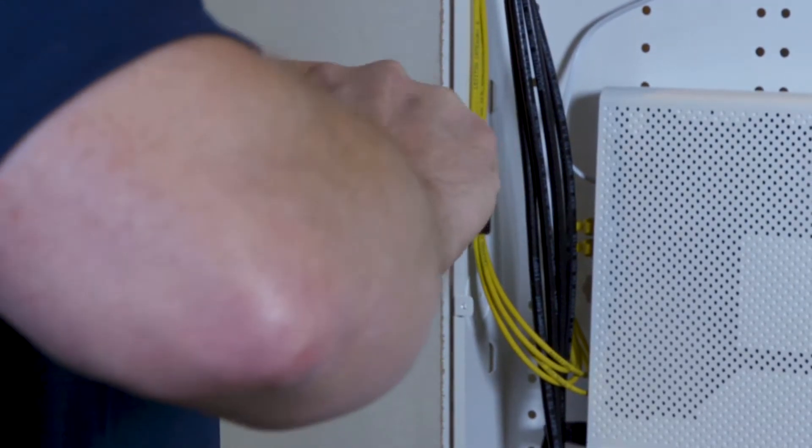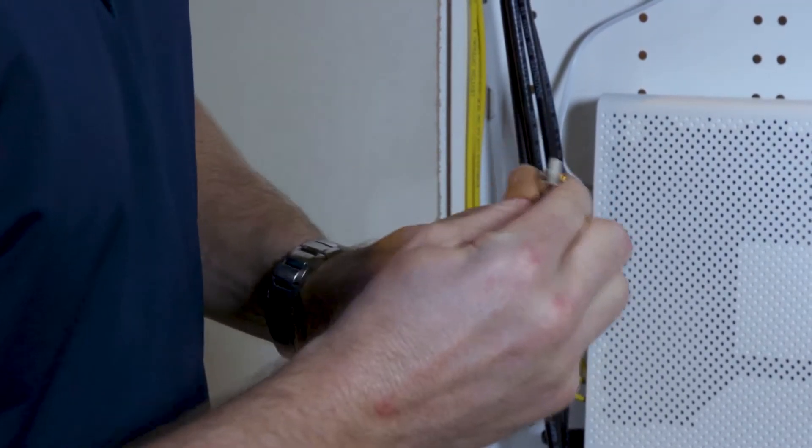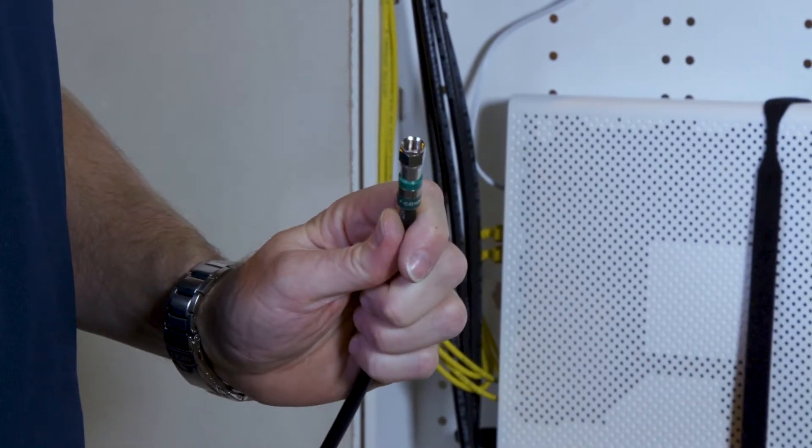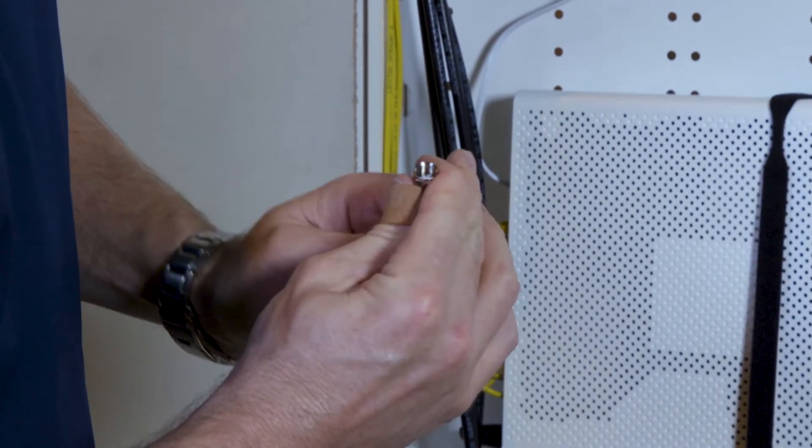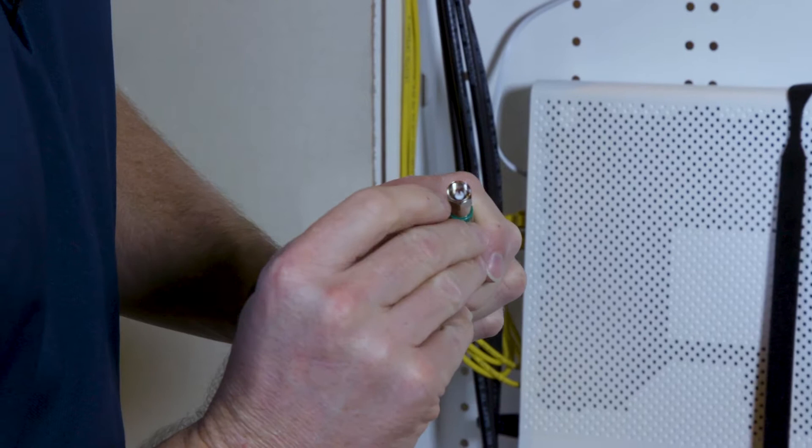So we have to force the connector down on there. See the tube has come out. Let's get that out of the way. And you want to push the cable on there until the dielectric, the white part, is flush with the end.